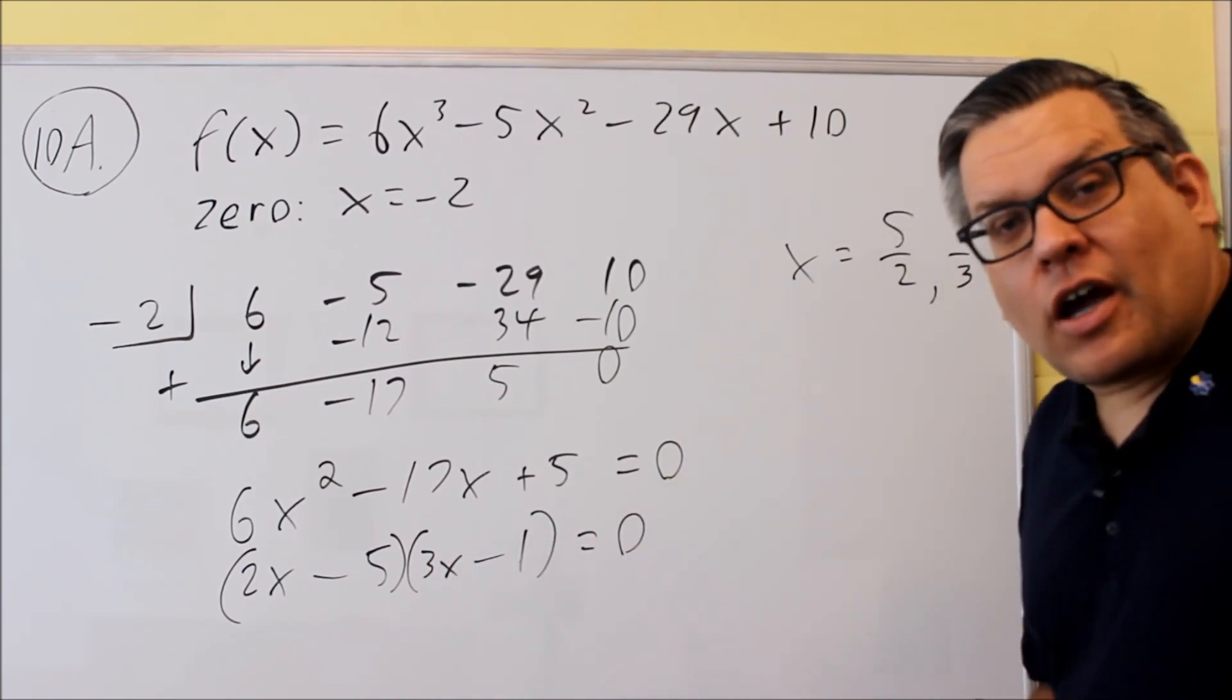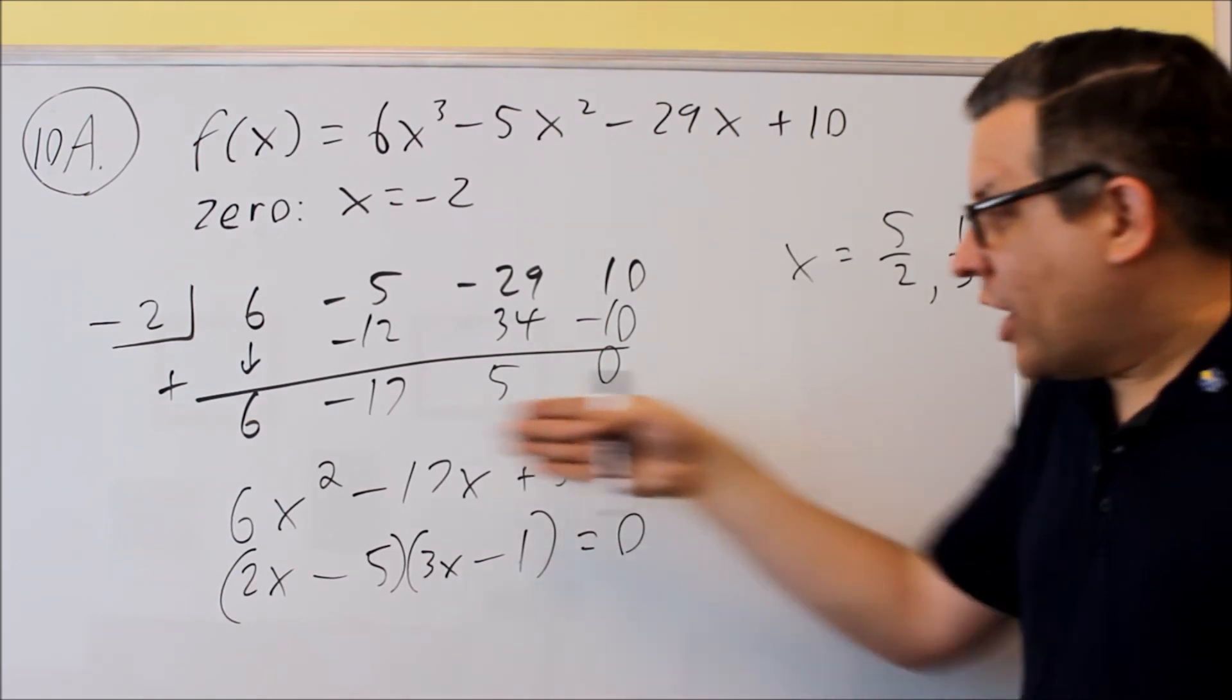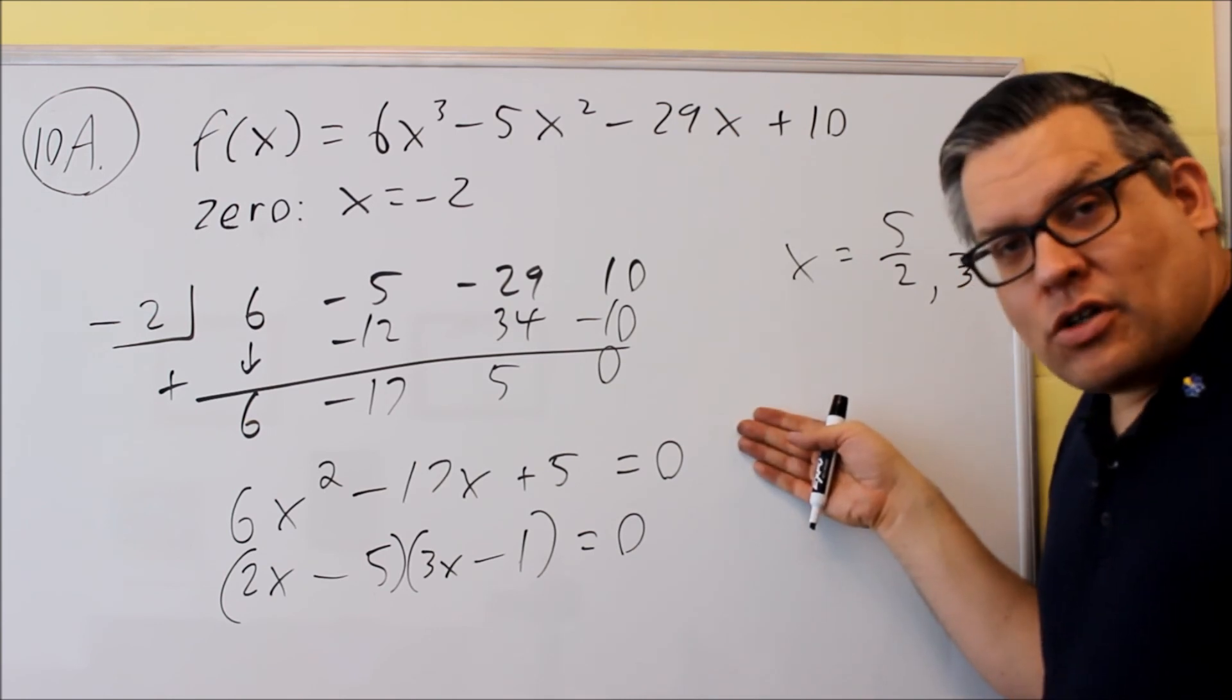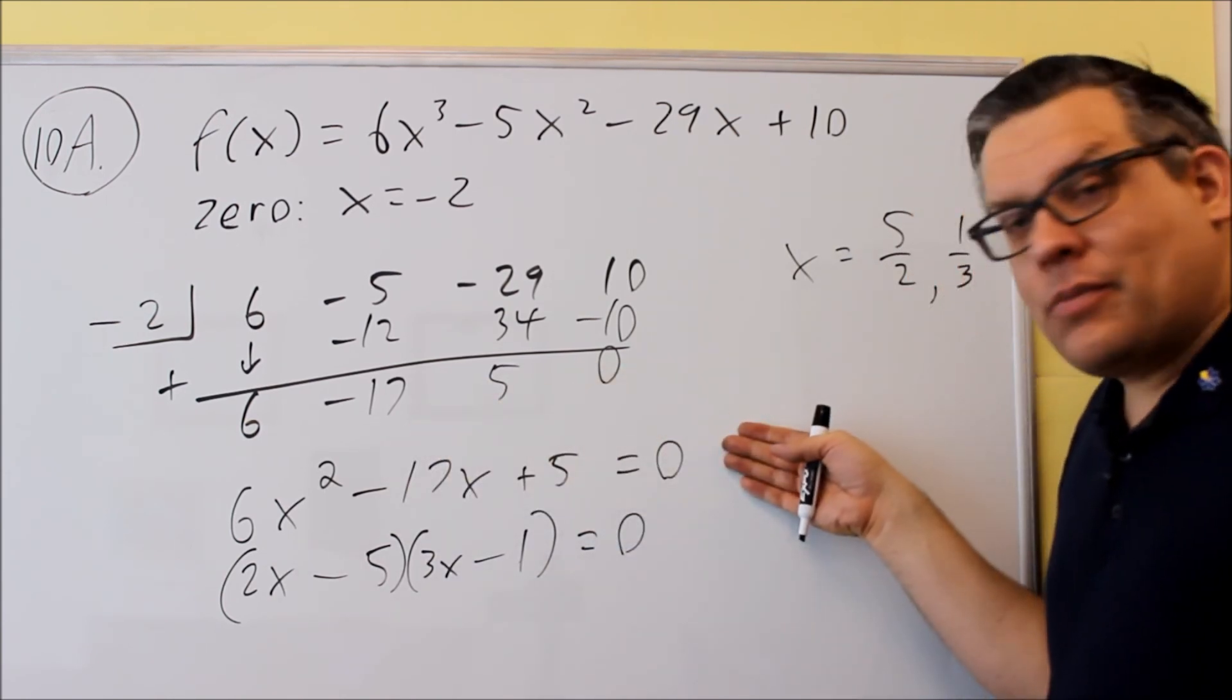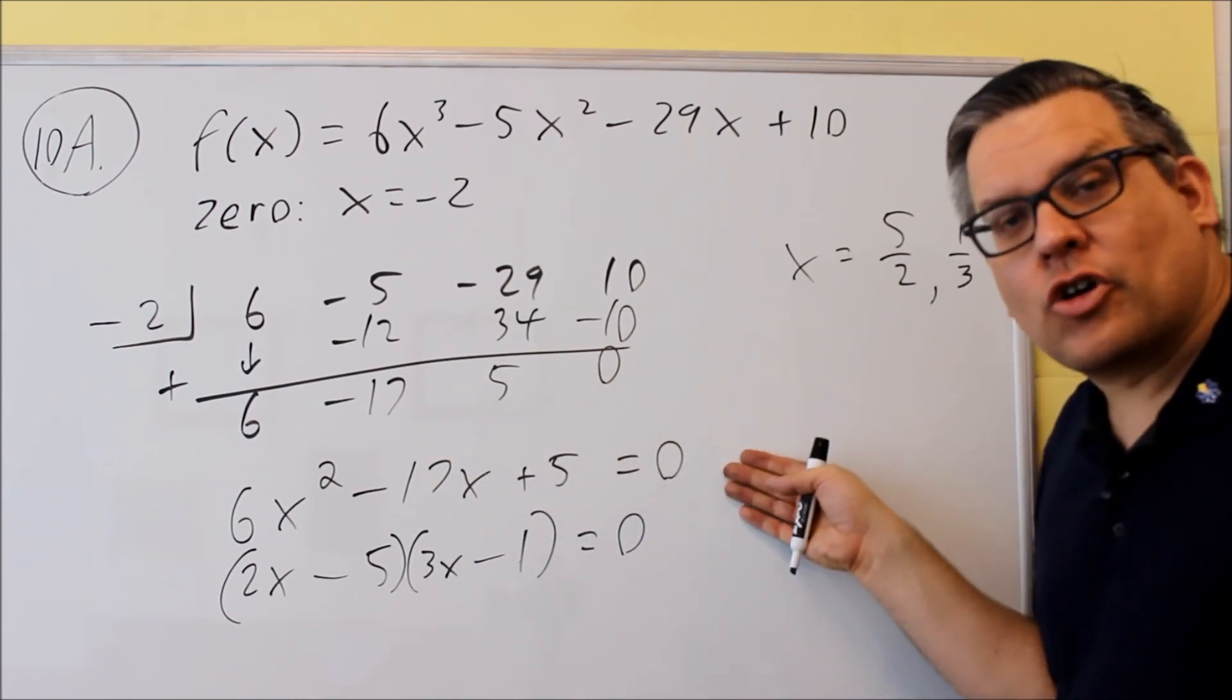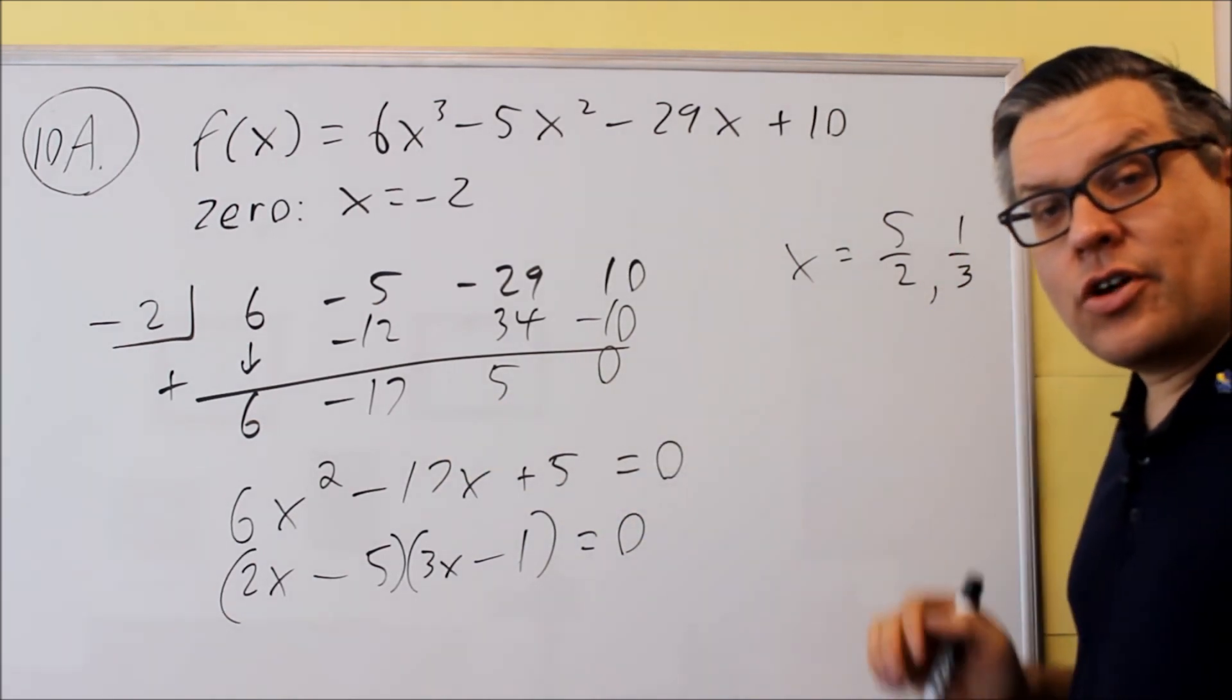The common mistake I usually see with this problem is students will come down to here and just write that: 6x squared minus 17x plus 5. Well that's not a zero, that's a polynomial. So instead, we have to solve that one and set it equal to 0. Make sure you do that last step and get to the last two answers here.